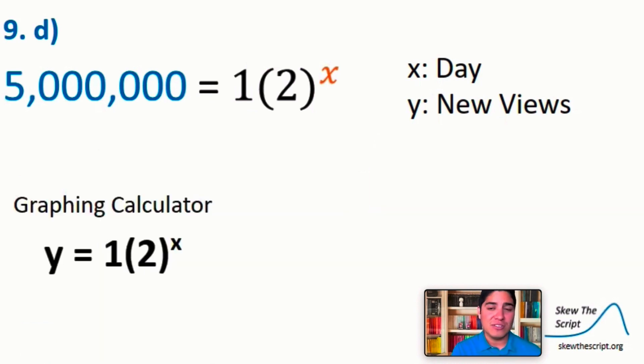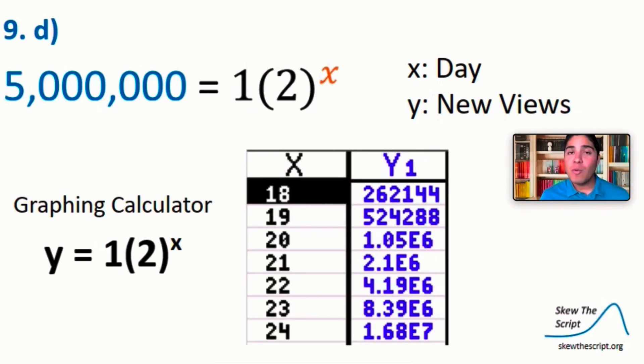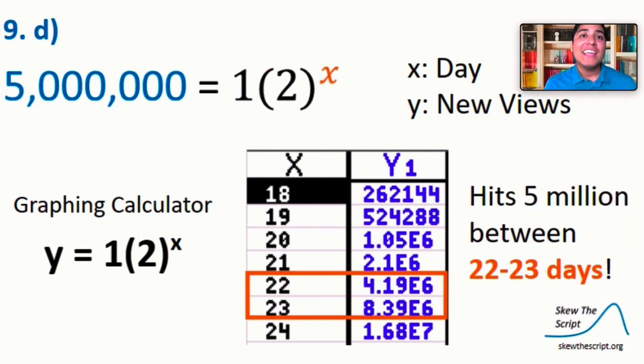Now let's try this using a calculator. So on Y1 of our graphing calculator, we input our model, 1 times 2 to the x power. And using the table feature, I'll be able to see that we get pretty close to 5 million, but not exact as we saw on the graph. Here, I would say it hits about 5 million views, somewhere between 22 to 23 days.